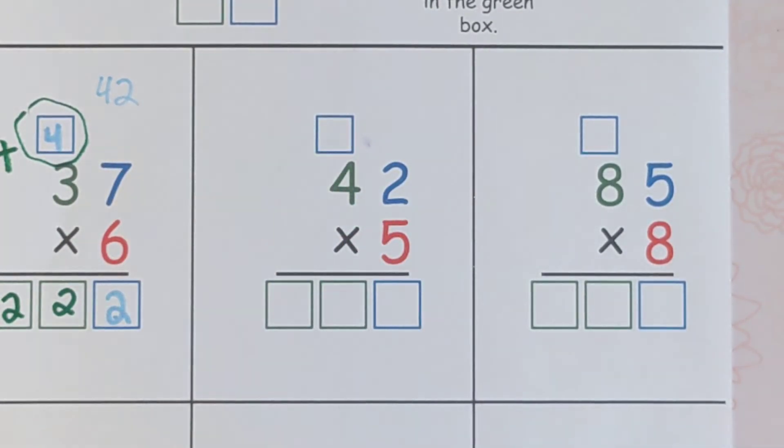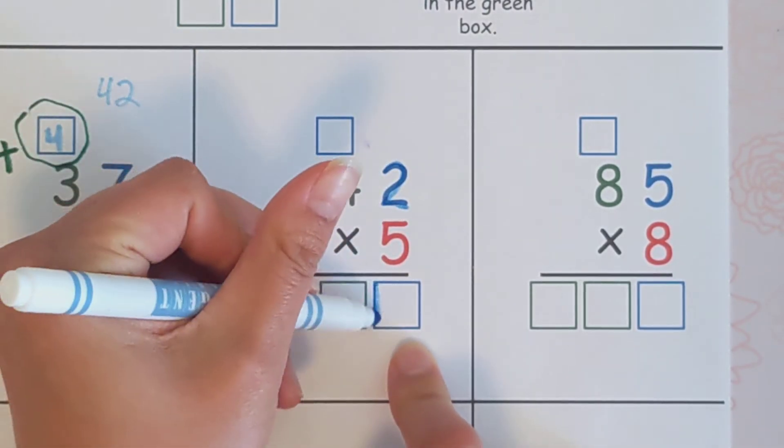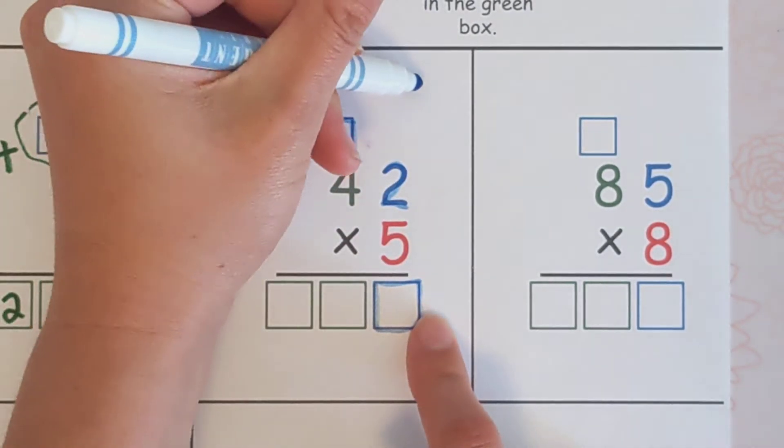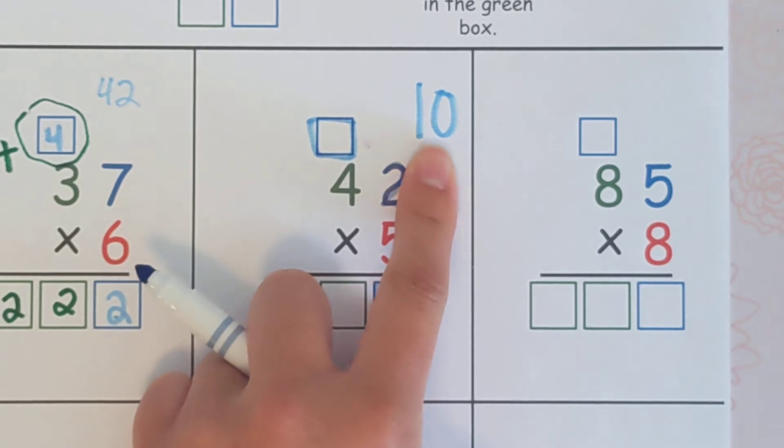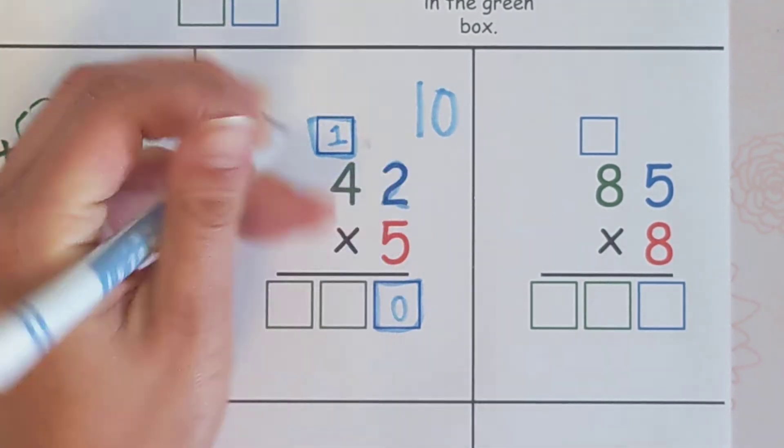We're gonna do five times two. And if you get confused about what to do first, you can look at the colors because the two is blue and so these boxes here are blue. Five times two is ten. That's a double digit number. So we're going to write it in. One, zero, ten.